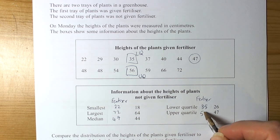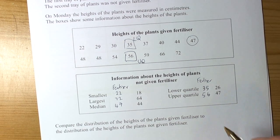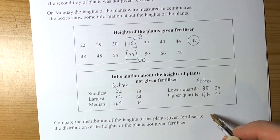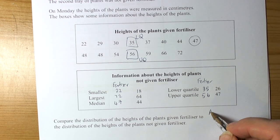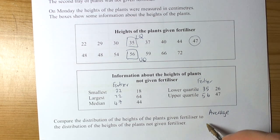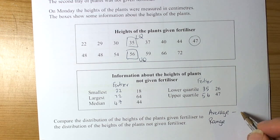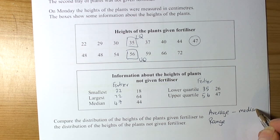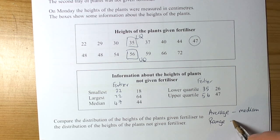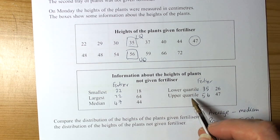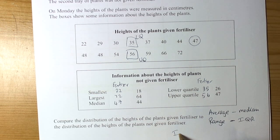We've got our values to do our comparisons. Always when you do comparisons with data, you should use an average and a range. In this case, because they've indicated you should calculate the median, the average we'll use will be the median average, and the range will be the interquartile range, since they've mentioned quartiles.